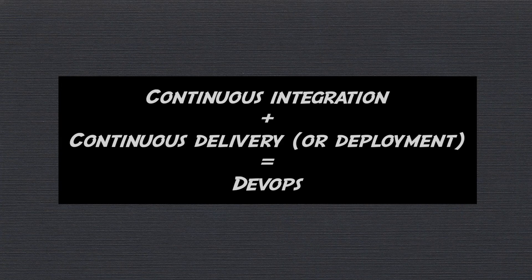A cloud native application would have this capability because it incorporates continuous integration and continuous delivery practices, and this comes under DevOps. So that means they have to use tools like Jenkins, Maven, Git, Puppet, and things like that.